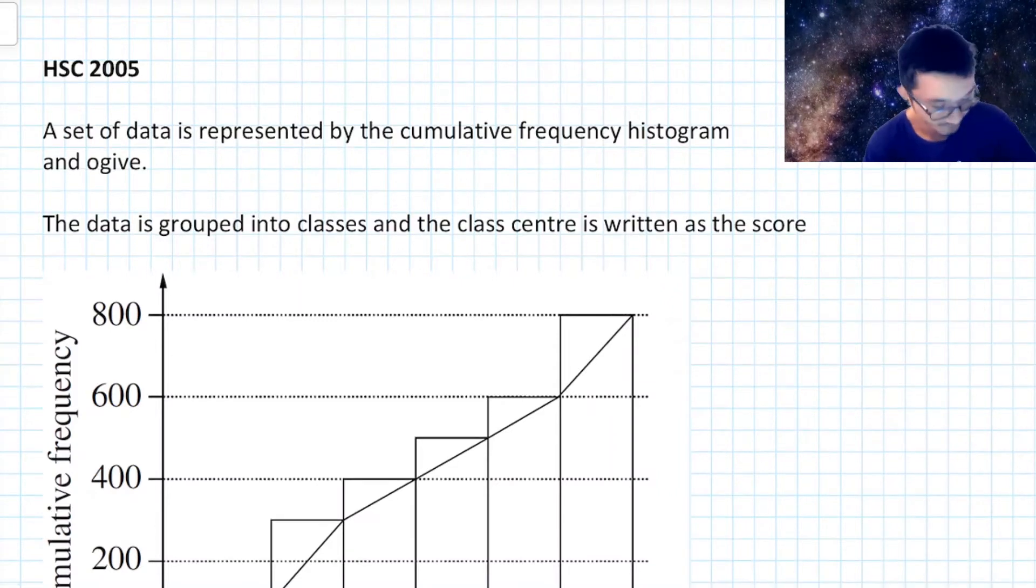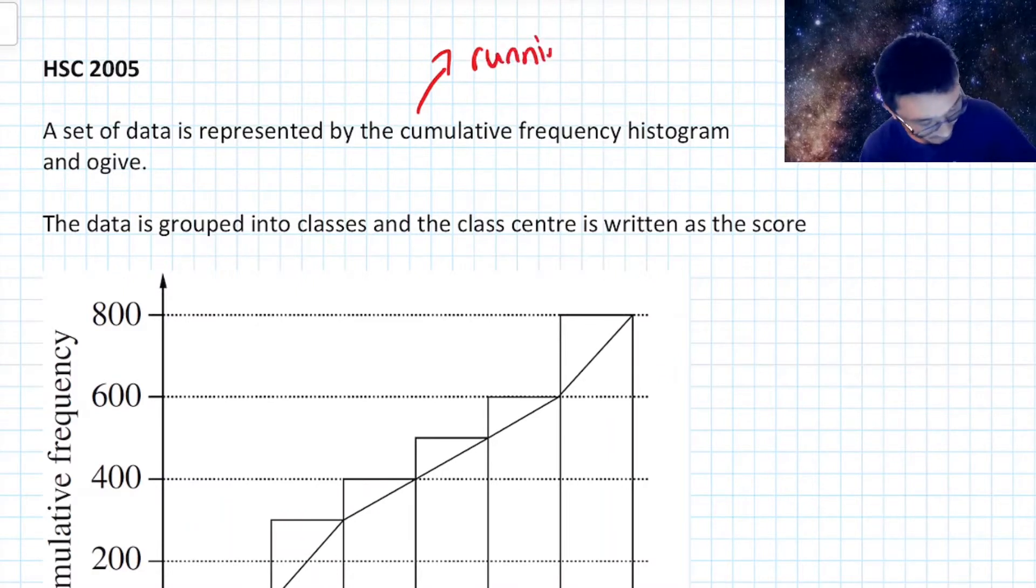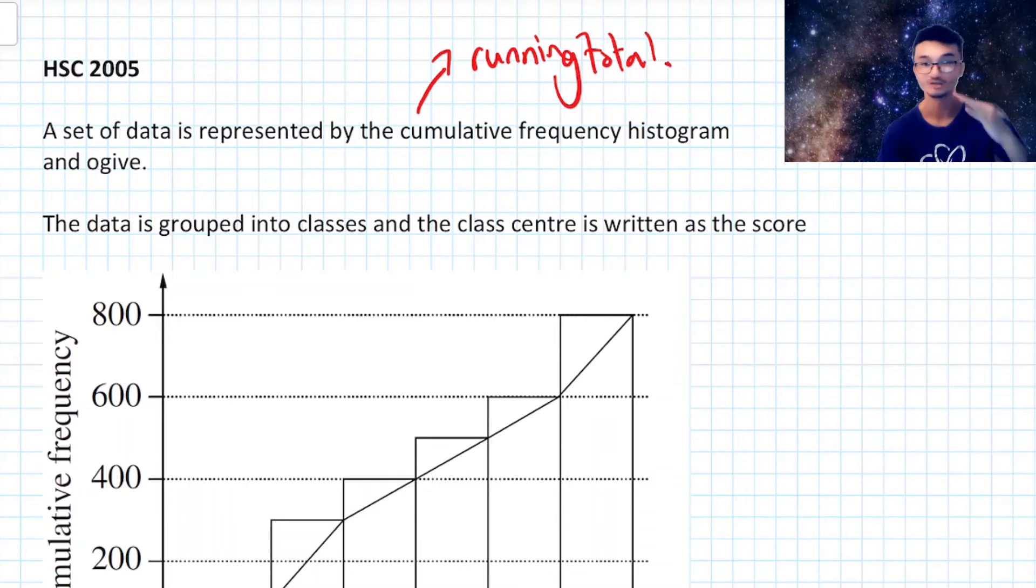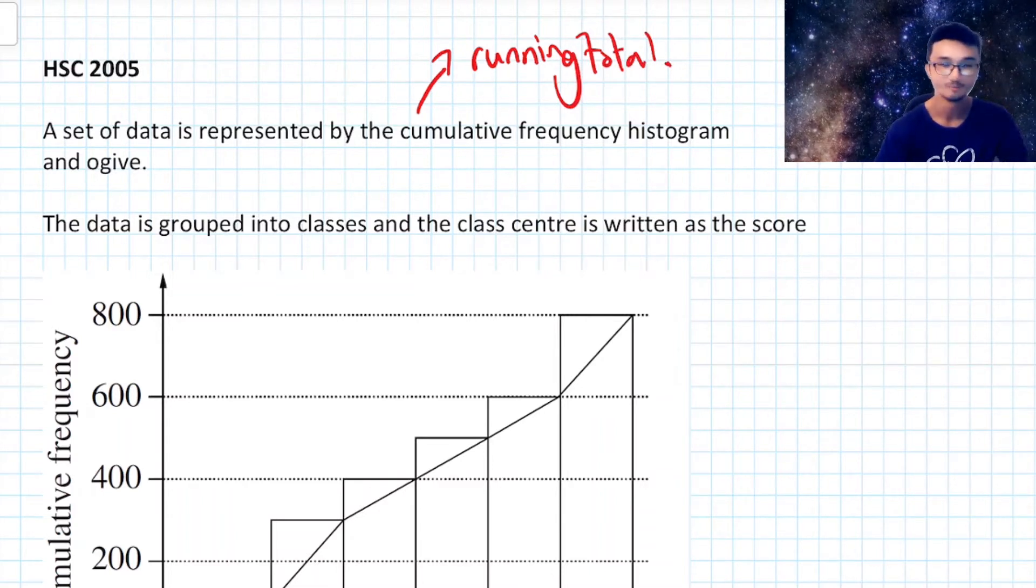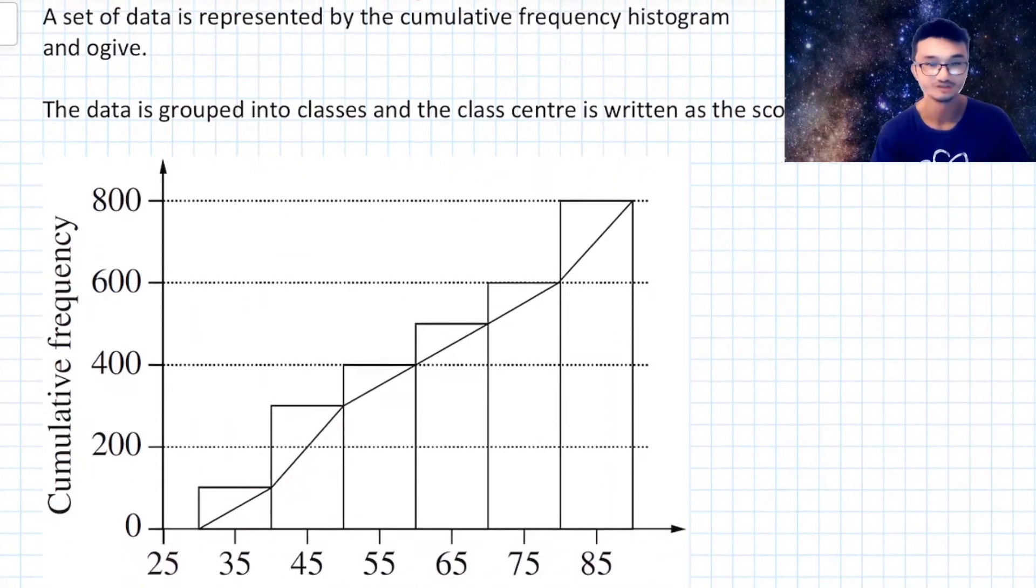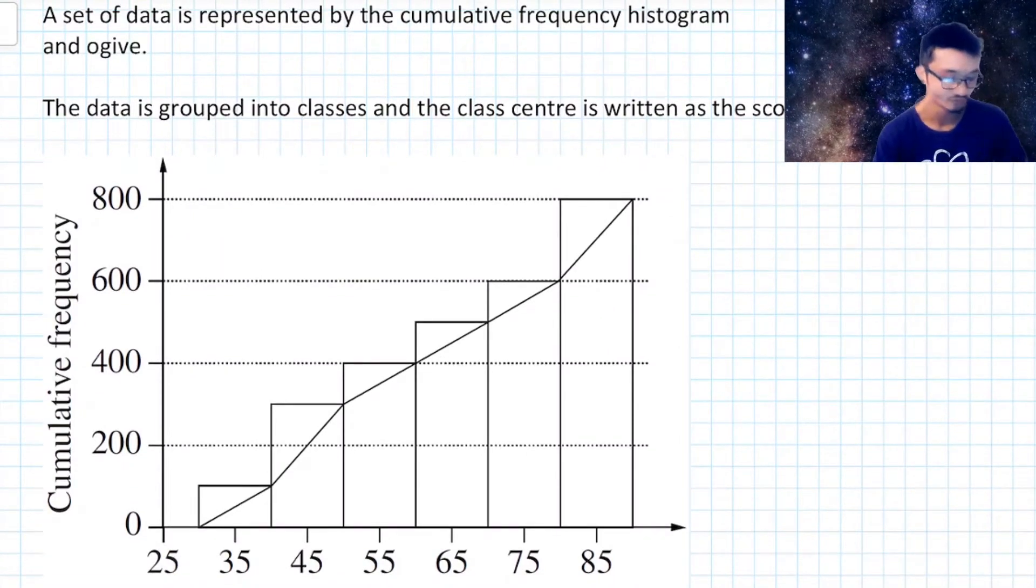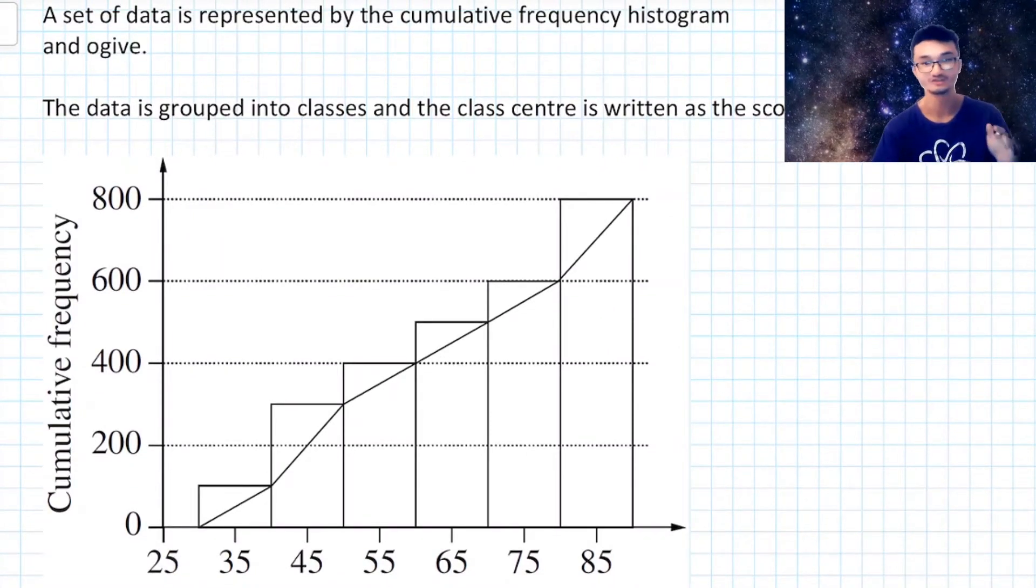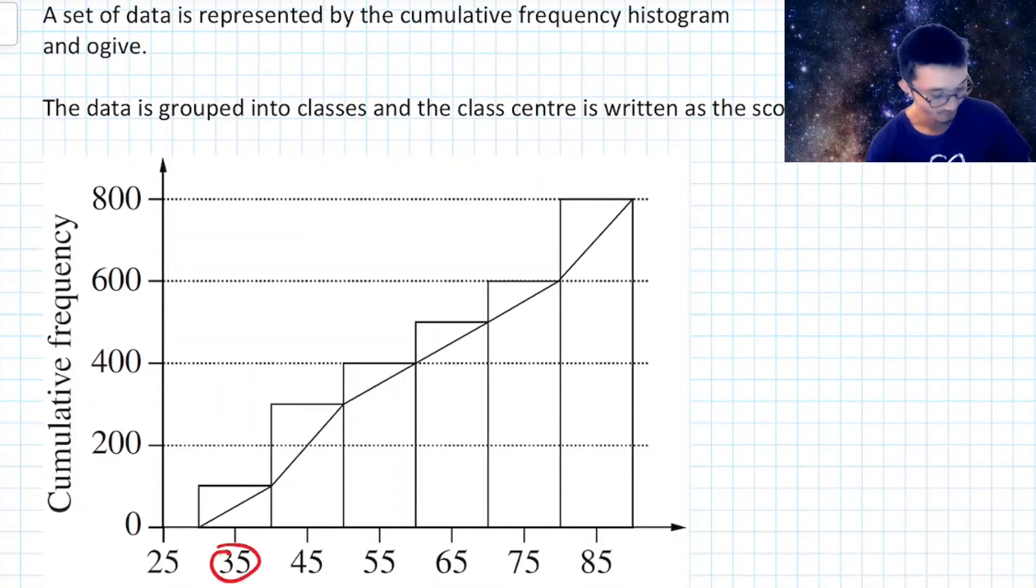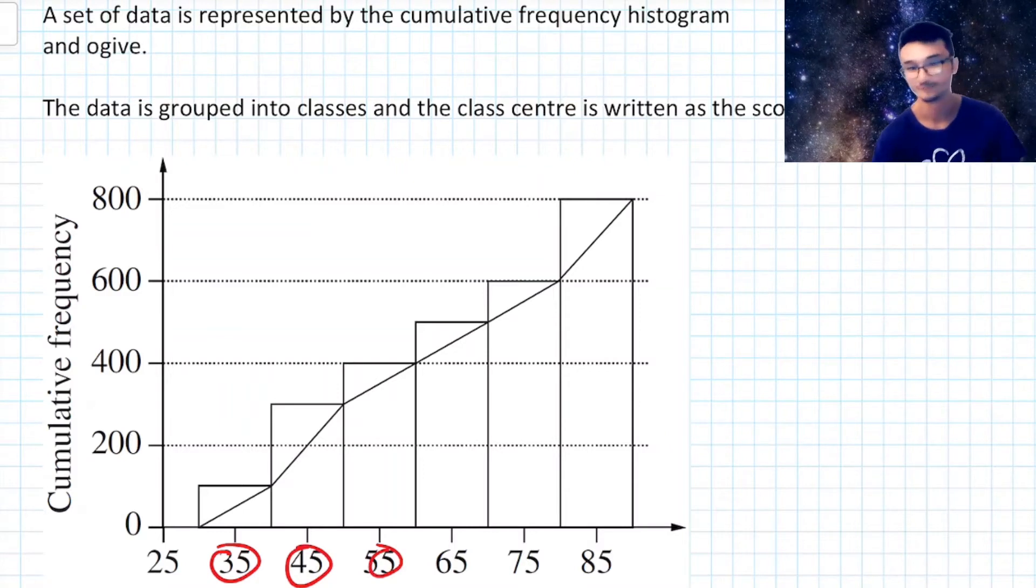Because remember, a cumulative frequency, that's talking about a running total, right? A running total for your data set. So a normal frequency histogram has these bars which represent how much a certain score has occurred. But when you have a cumulative frequency one, what happens is that we have this ordered now and also each of these bars, they don't just represent how many times this particular value occurred or these particular values. It counts all of the previous ones as well.